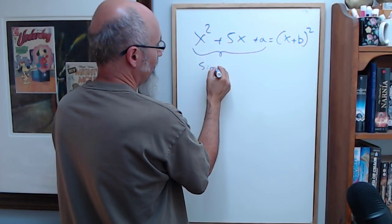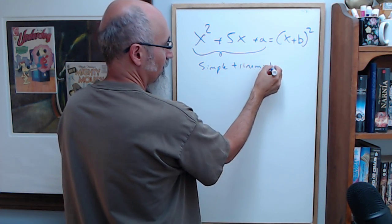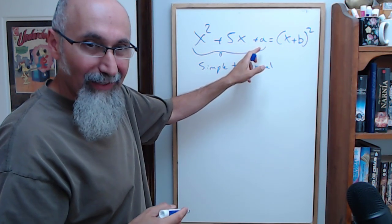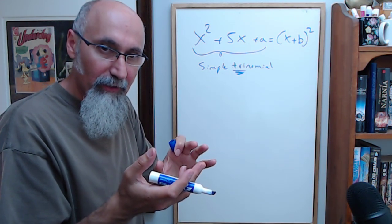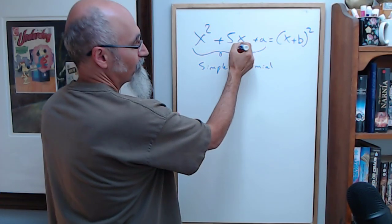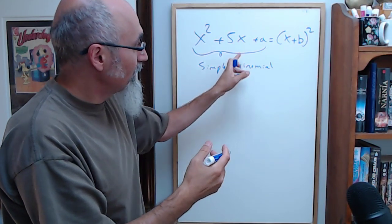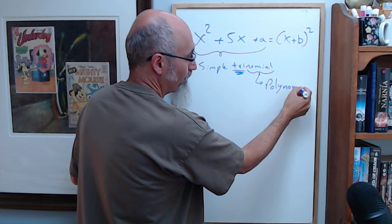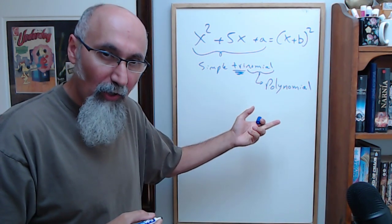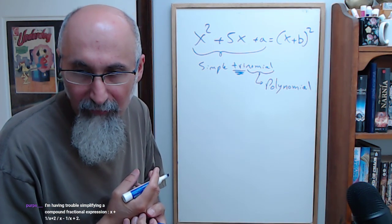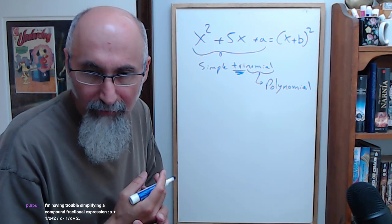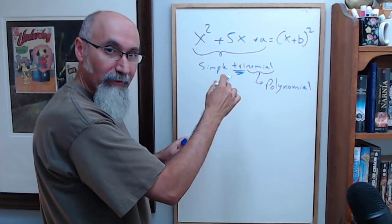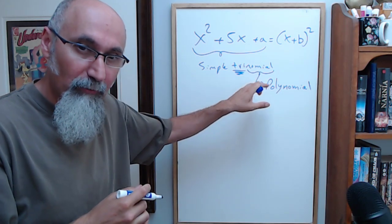A trinomial has three terms separated by plus and minus signs. The term 'trinomial' is derived from 'polynomial.' A polynomial is a function — and we also have a question about simplifying a compound fractional expression. I think that one might be easier, but I'm going to go through the whole process of explaining what a perfect square is, do a simple example, and then we'll try to get the answer.